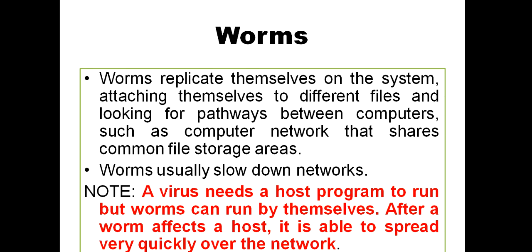Worms replicate themselves on the system, attaching to different files and looking for pathways between computers, such as computer networks, shared files, and storage areas. There is a difference between virus and worm: a virus needs a host program to run, but worms can run by themselves. After a worm affects a host, it is able to spread very quickly over the network, and overall it slows down the network.